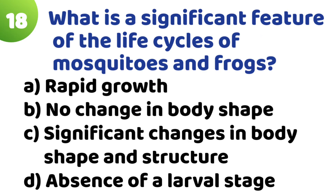Question 18: What is the significant feature of the life cycle of mosquitoes and frogs? Option A: Rapid growth. Option B: No change in body shape. Option C: Significant changes in body shape and structure. Option D: Absence of larval stage. The correct answer is Option C — Significant changes in body shape and structure.